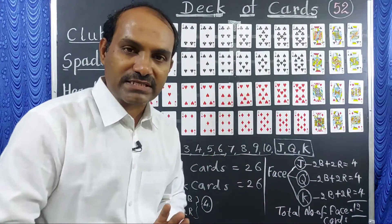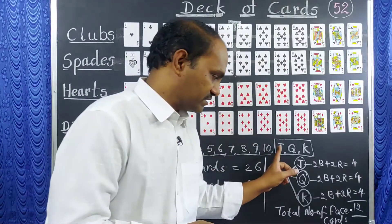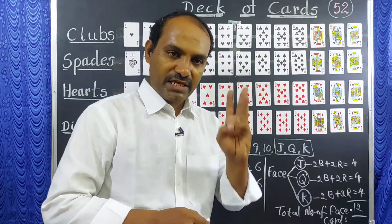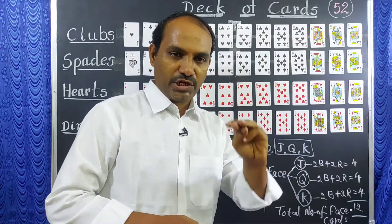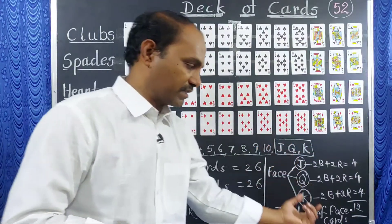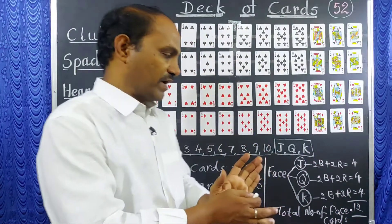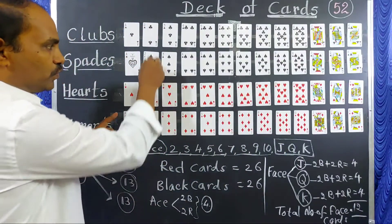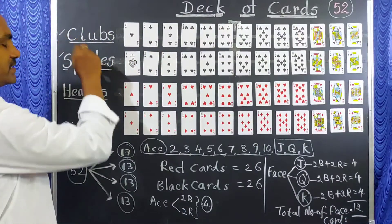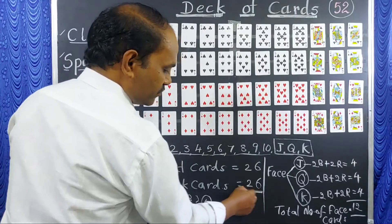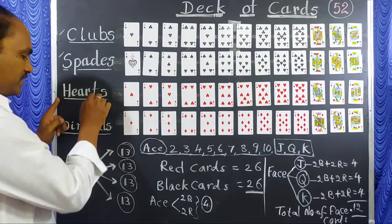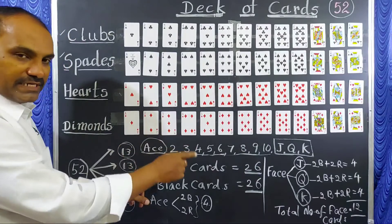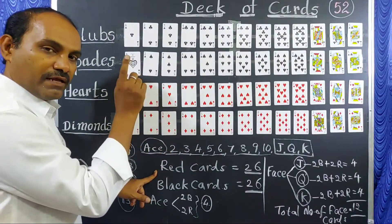In each suit, how many face cards are there? 3 face cards — Jack, Queen, King. Overall, how many face cards? In each suit 3, times 4 suits — 3 into 4 is 12 face cards in total. Clubs and spades are black, so 26 black cards; hearts and diamonds are red, so 13 plus 13 equals 26 red cards.